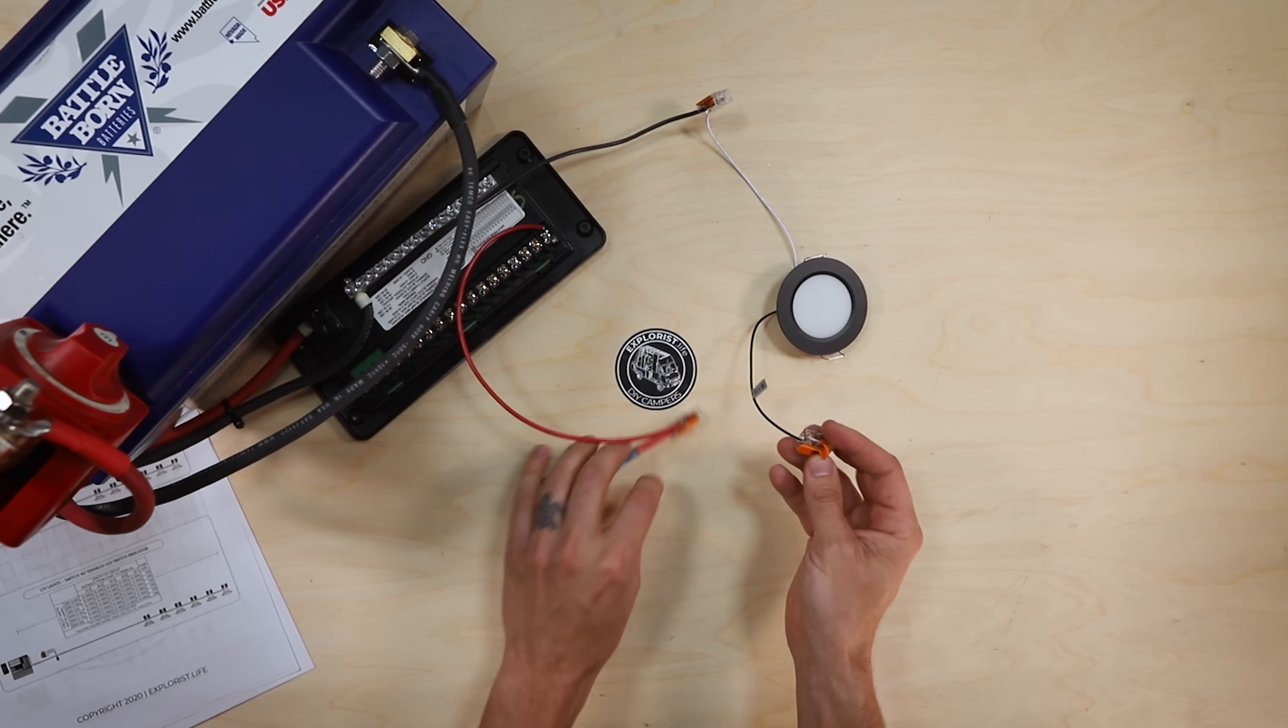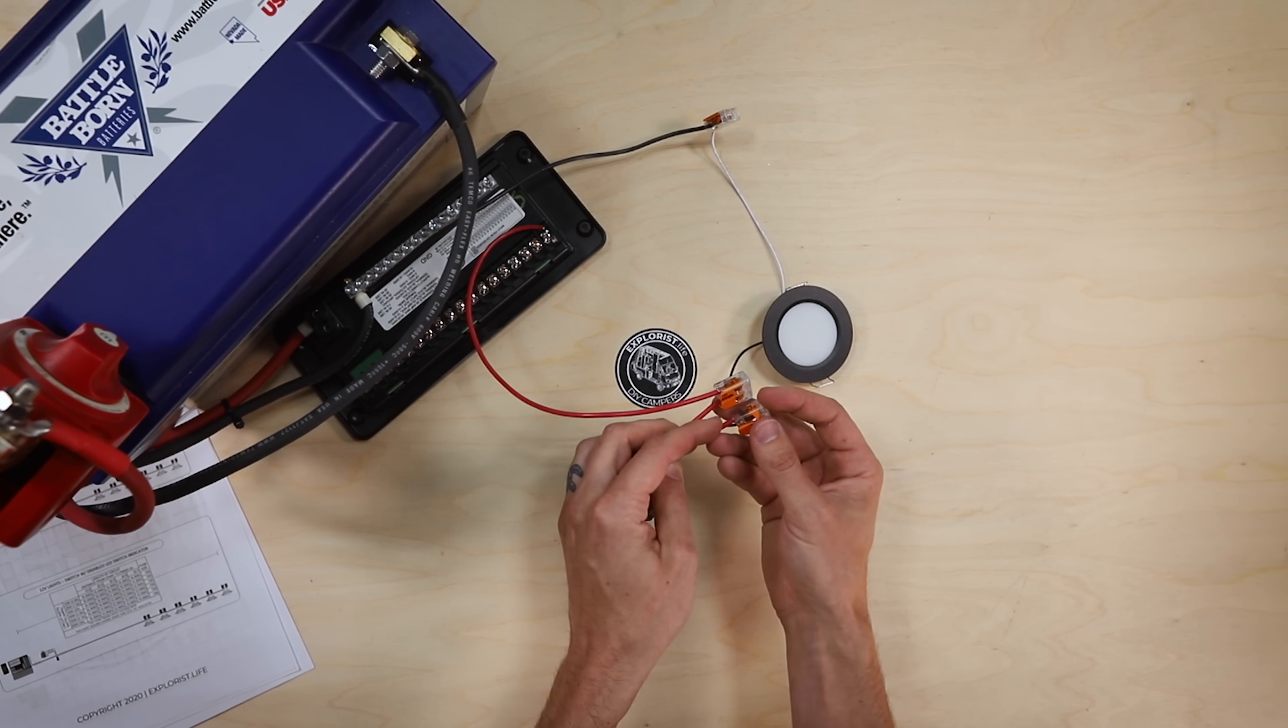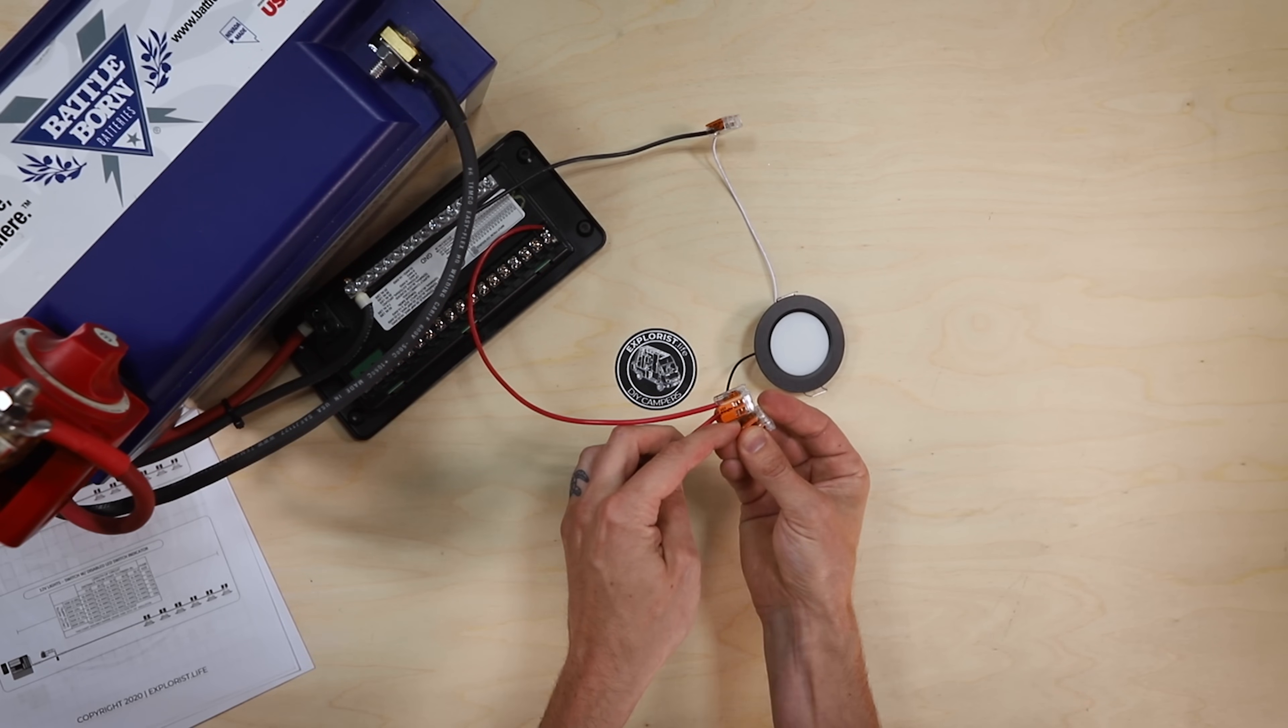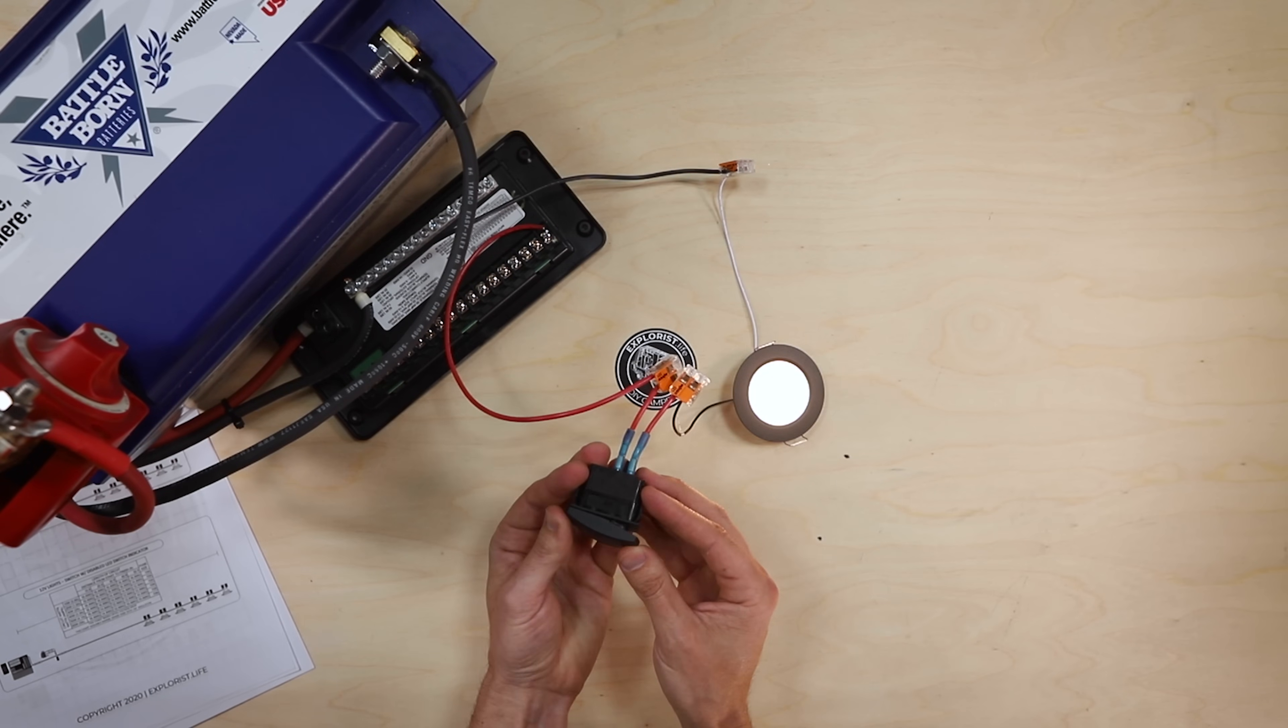And then for the positive light, the positive connector going to the light, just put that on the other side of the switch. Clamp that down. And then we have a light switch.